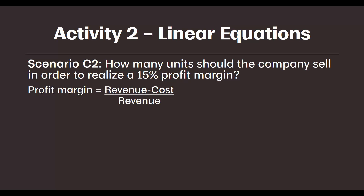If I want to know how many units I should produce in order to have a 15% profit margin, then I need to fill in the profit margin formula with my variables for Nike, and set this formula equal to 15%. Remember in our previous problems, revenue was 25Q and cost was 10Q plus 500. When I input that into this profit margin formula, I have 25Q for revenue minus the total cost, all of that in parentheses, and I divide that total profit amount by 25Q, or revenue, and set it equal to 15%.